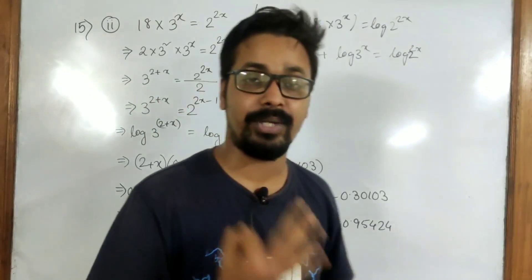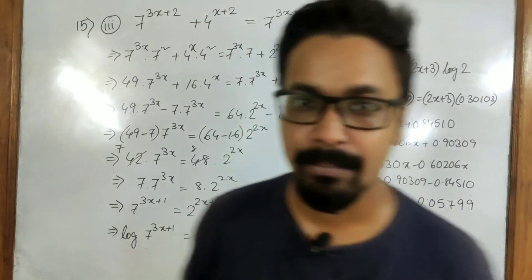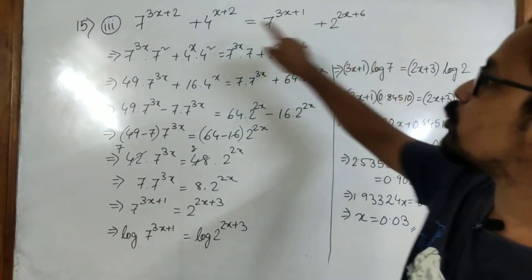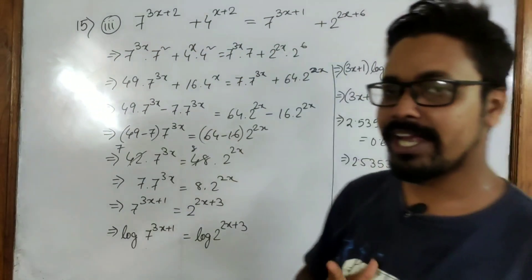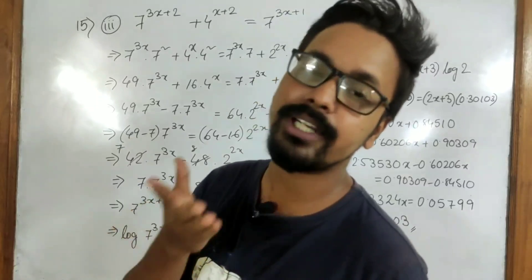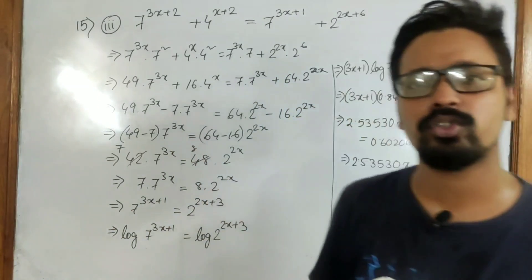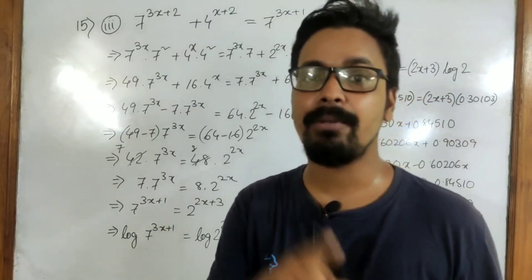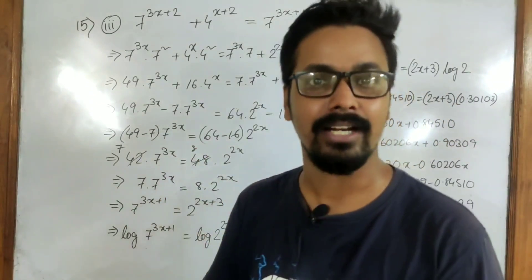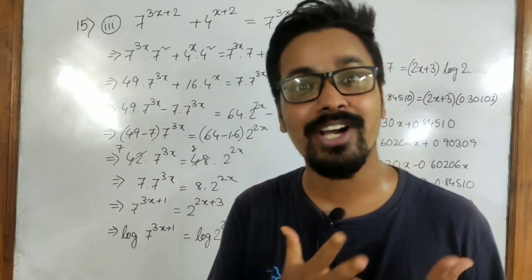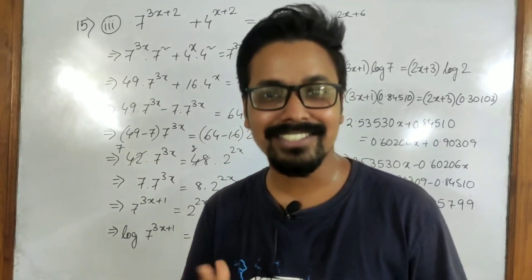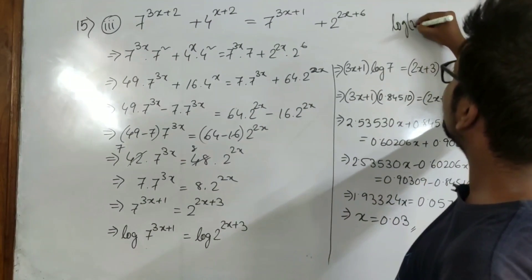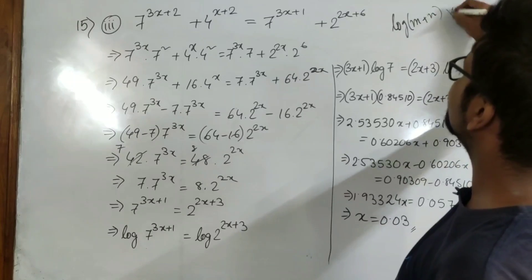Now let us move on to question number 3. It looks very complex because we have a plus in the middle. If we had multiplication in the middle, it would have been a lot easier because we have a formula for log of m into n — log m into n equals log m plus log n. But we do not have any formula for log of m plus n, so there is no formula for this.